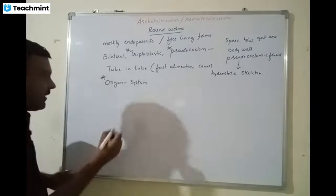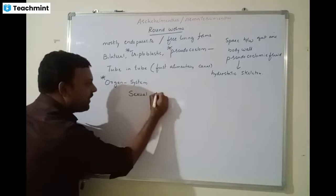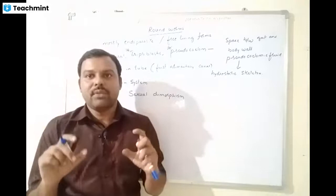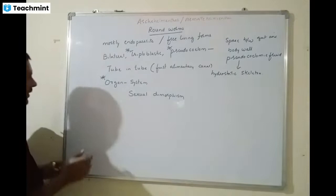They also start showing sexual dimorphism — the males and females are different. Like human beings, these tiny roundworms also show external and internal differences between male and female, which we call sexual dimorphism.